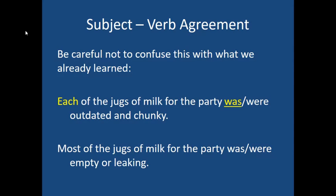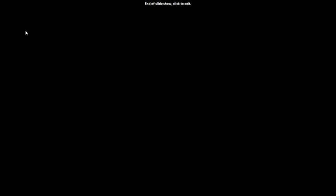In the second sentence — 'most of the jugs of milk for the party was or were empty or leaking' — I get to use the verb 'were,' which is plural, because 'most' is both singular and plural, so I have to look at the prep phrase. But I need to ignore the prep phrase on the first sentence with 'each.' So see what you can do to practice those, then go on to the third worksheet and put all these subject-verb agreement rules to practice.